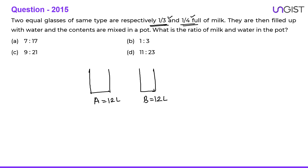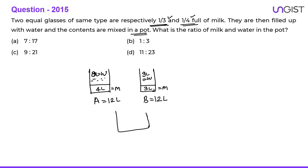The first glass is one third full, which means four liters of milk. The second glass is one fourth full, which is three liters of milk. Then they are filled with water and the contents are mixed in a pot. So glass A will have eight liters of water and glass B will have nine liters of water.